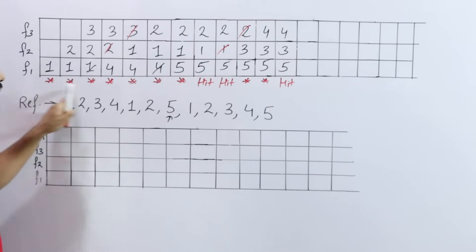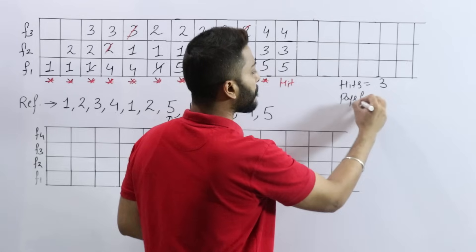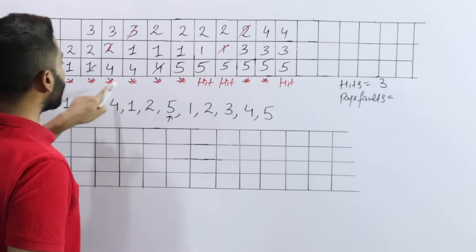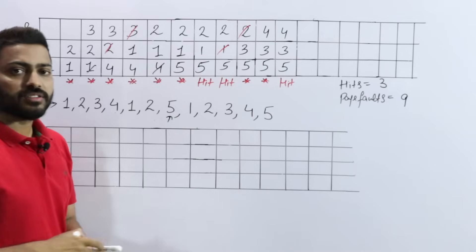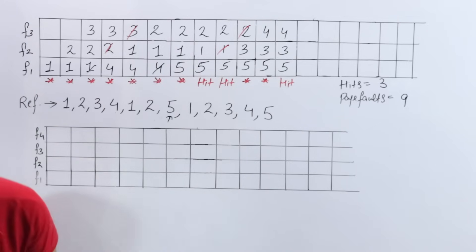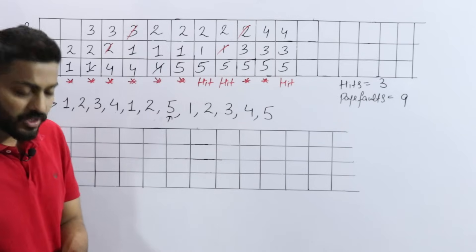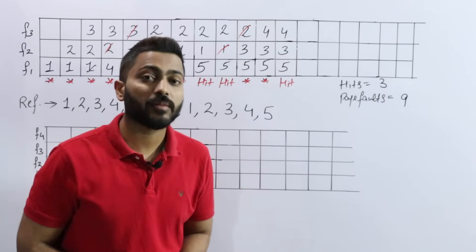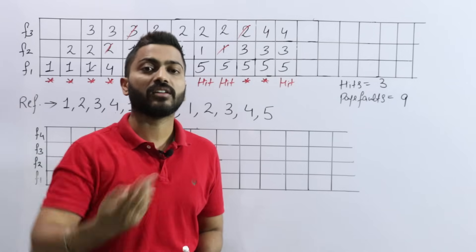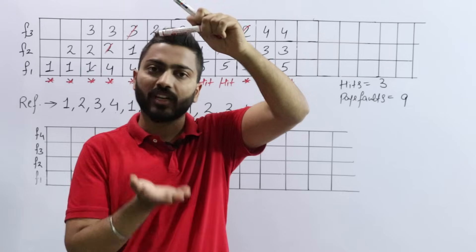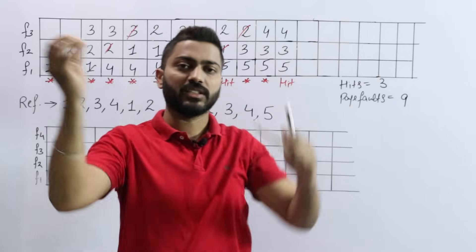Counting the results for 3 frames: number of hits = 3 and number of page faults = 9. Now we solve the same question again but increase the number of frames from 3 to 4. More frames means more space is allocated so that more pages of the process can reside in main memory simultaneously.